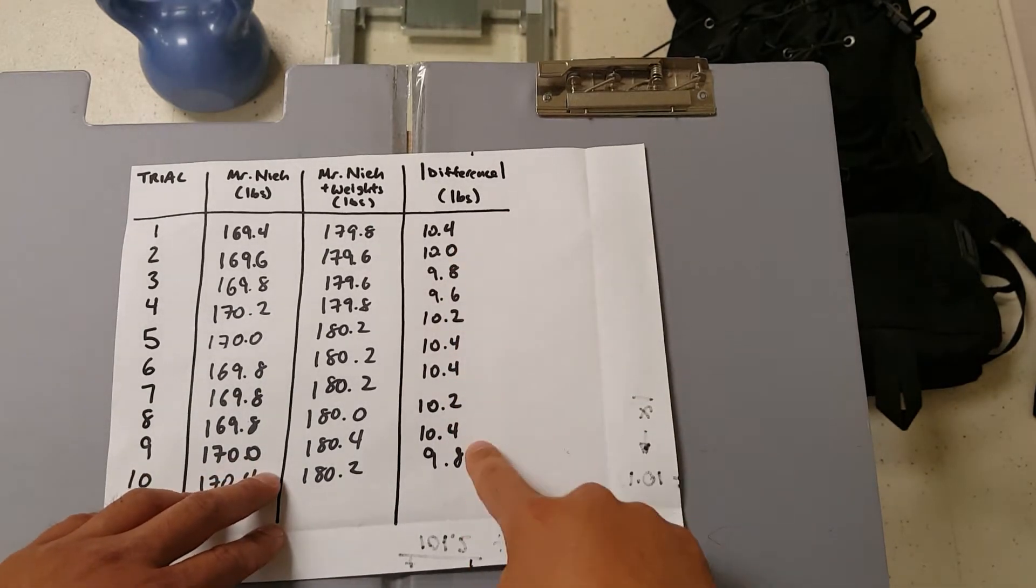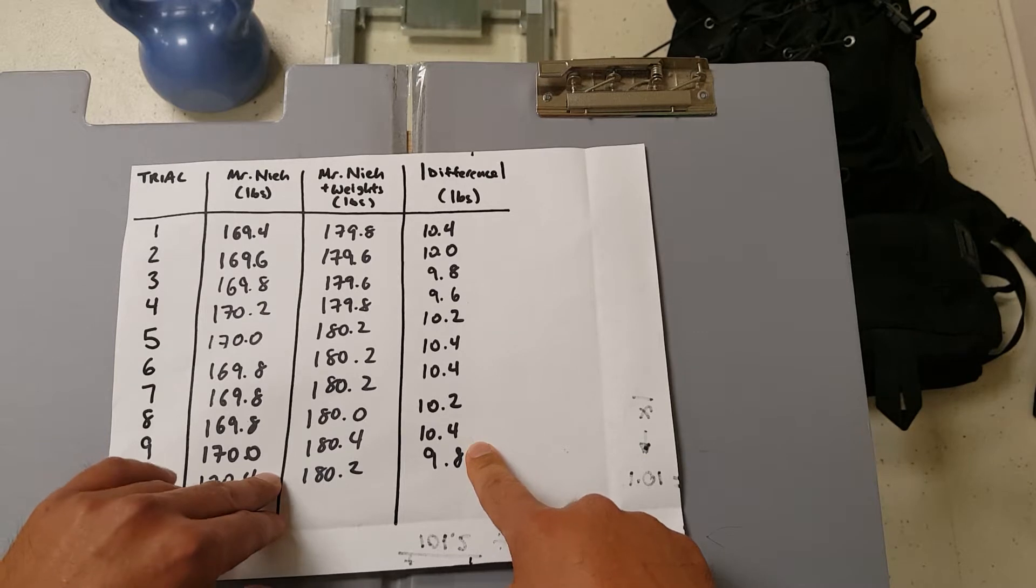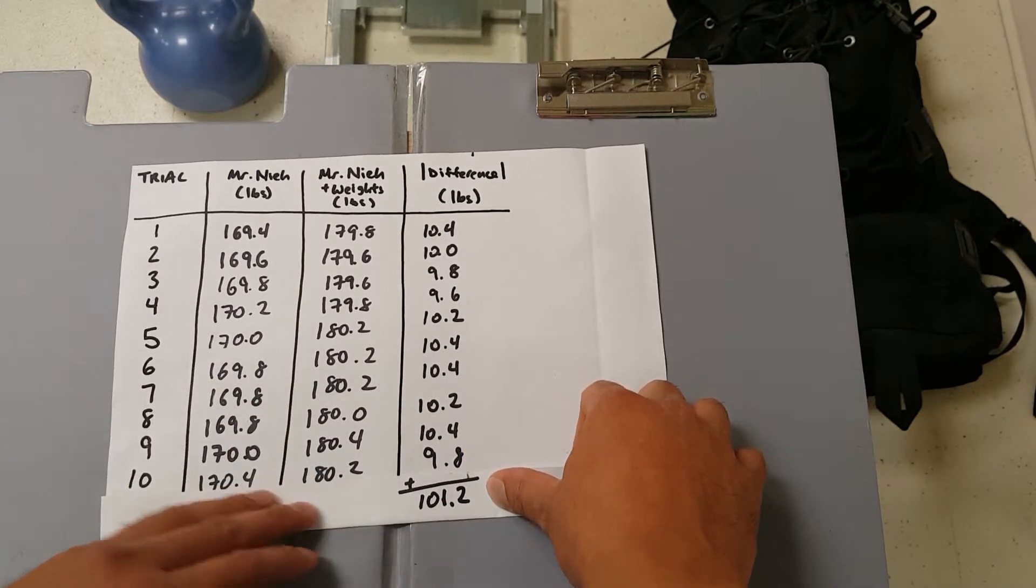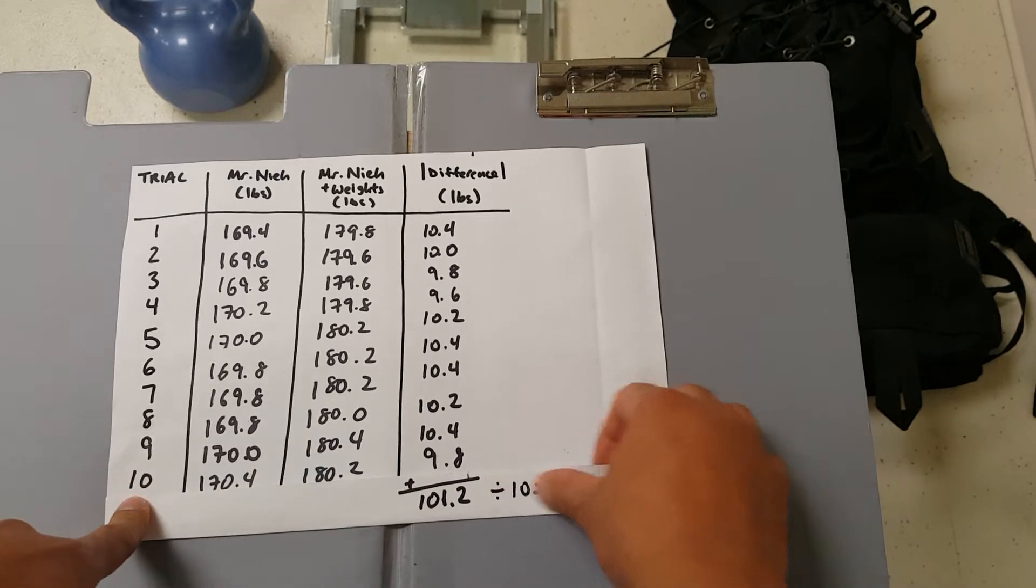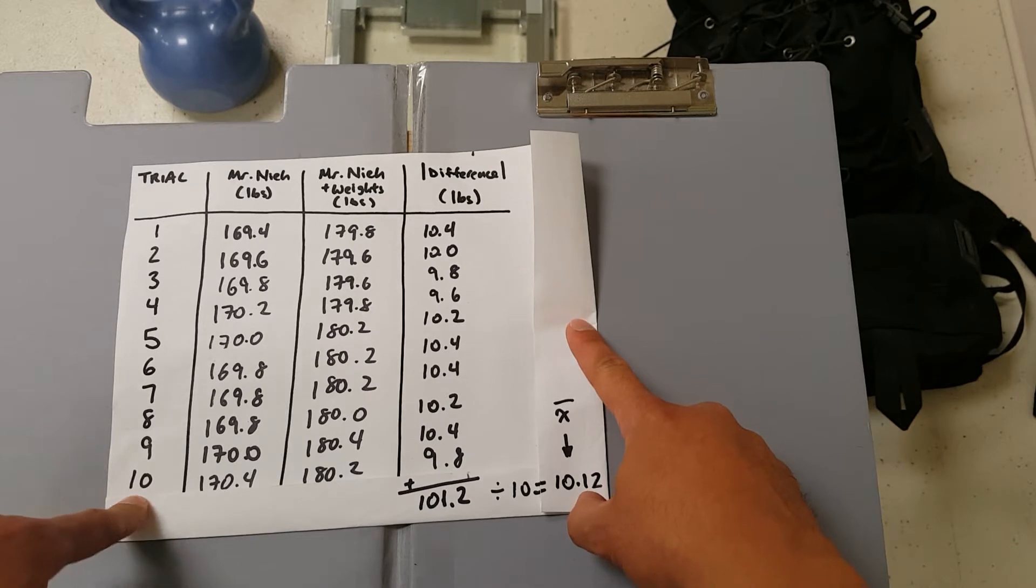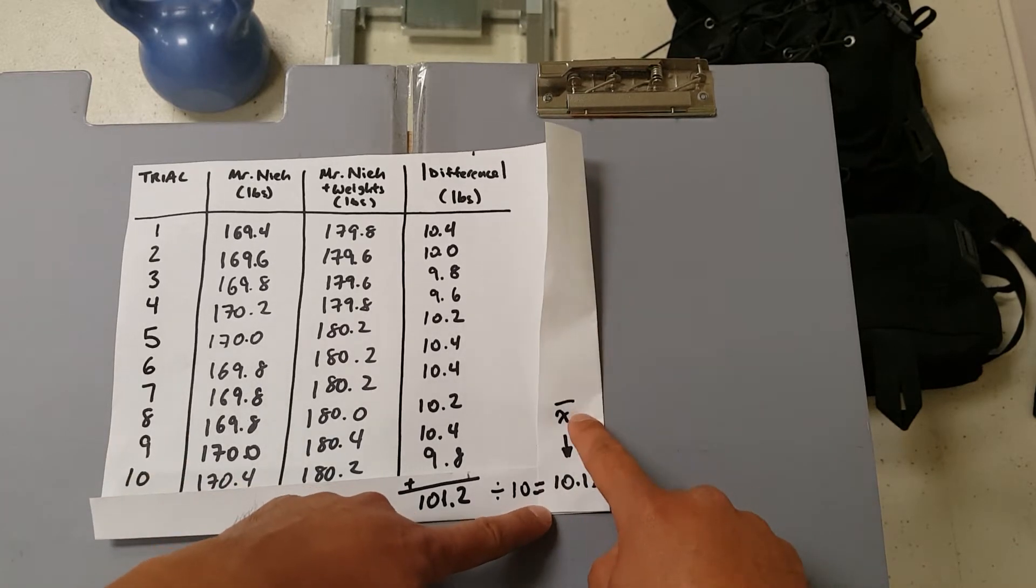We take all these entries over here and let's figure out what the mean is, or what we commonly know as the average, where what you do is you add all the data table points together. Since there are 10 data entries, we divide by 10. And that gives us 10.12. To represent it symbolically, we write the letter x and we place the bar on top. And that is the mean.